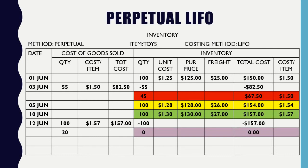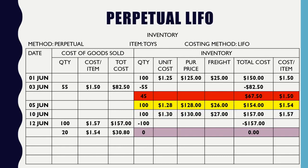Now I only have two batches left — my red one and my yellow one. Using LIFO, the next one I'm eliminating is June 5th. I need to sell a total of 120 units, so 20 units come out of my yellow batch at $1.54. I eliminate that from my yellow batch, leaving 80 units at $123.20 still at $1.54. Tally up the total — selling 120 units gives a grand total of $187.80.